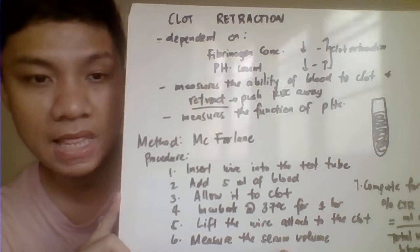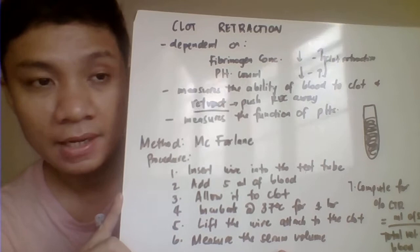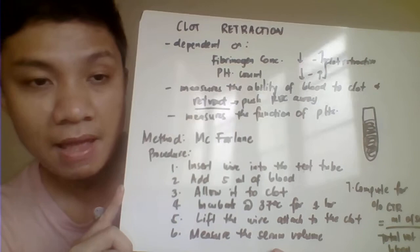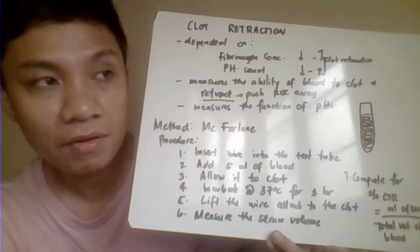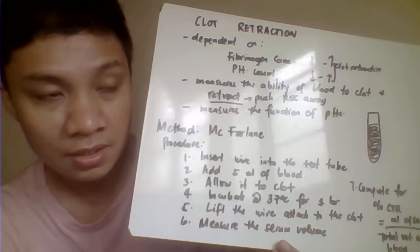It measures the ability of our platelets to clot and retract, which is highly dependent on the level of fibrinogen and platelets. The level of fibrinogen and platelets has an inverse relationship with clot retraction.